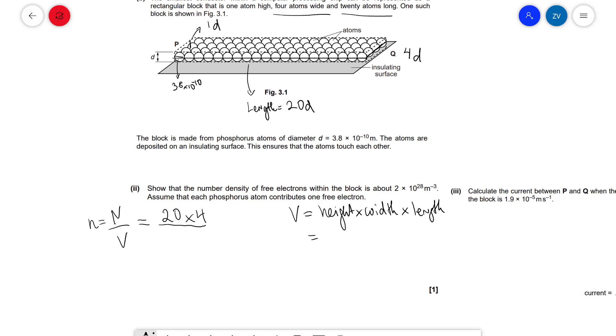Now the height is just equal to the diameter, so that's d, multiplied by the width which is 4d, multiplied by the length which is 20d. So this means that overall the volume is going to equal 4 × 20 which is 80d³.